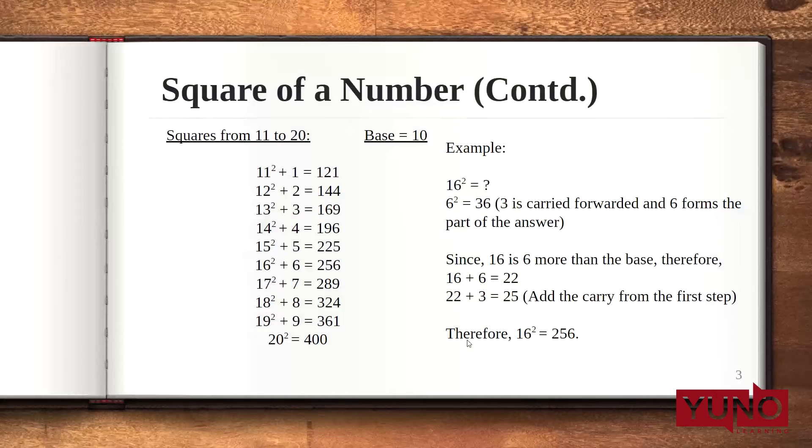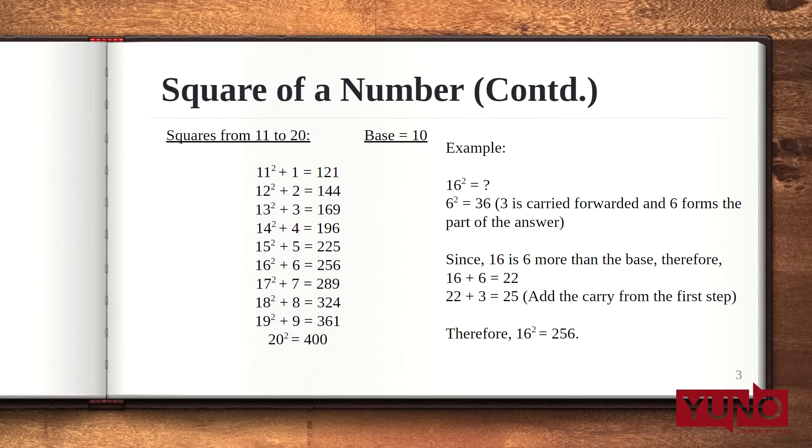Now, let's get to the trick. Here we will be calculating squares from 11 to 20. While calculating the squares of these numbers, we will consider 10 as our base. For 11 square, 11 is 1 more than 10. These are the notations and these are the numbers that are more than the base. The first step here is, write the square of these numbers at the ones place.